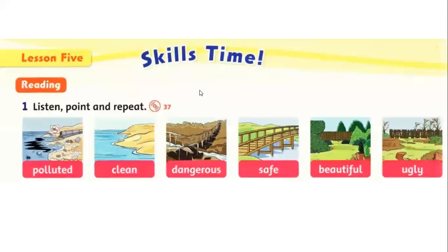Today we are going to learn some opposite words. The first one is polluted, and the opposite of it is clean. As you can see in the picture, we have sewage and garbage on the beach and in the sea, so the area is polluted — it's dirty. In the second picture, there is no pollution, no sewage water, nothing dirty. It's clean.